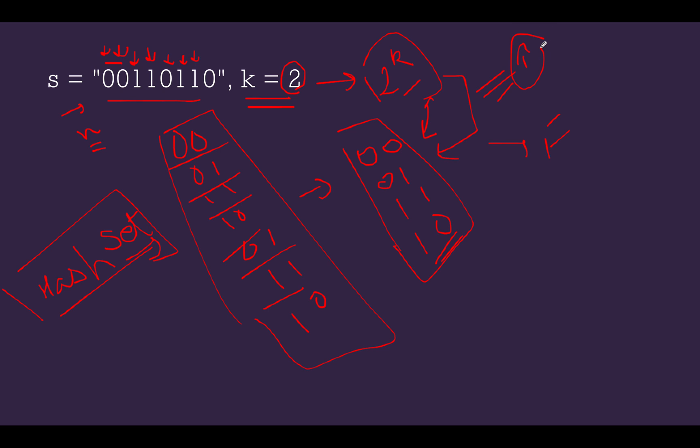So pretty simple way of thinking where we are generating all the possible substrings of length k, putting them in a hash map, then comparing the expected size, what would have been if there would have been an exact match, that would be 2 raise to power k. What is the current size? Current size of the hash set would be given by set.size. If it matches, then we return true from the solution. Otherwise, we return false. I hope this solution is clear to you.